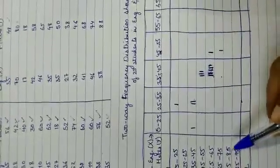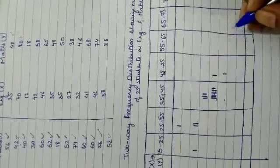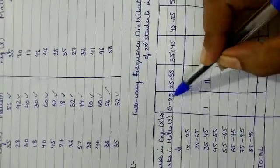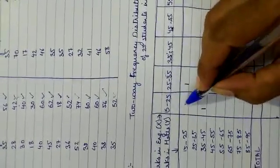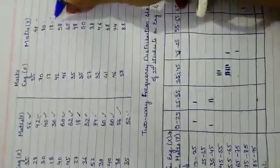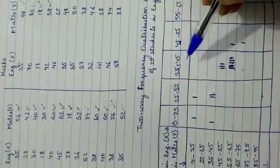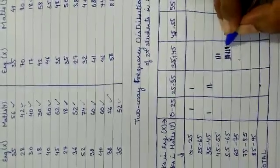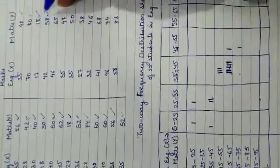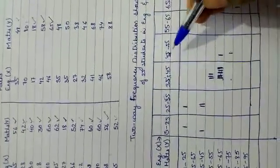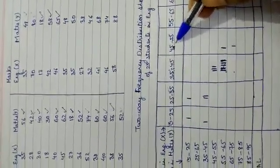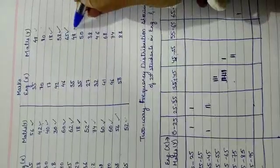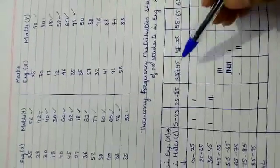Next is X=42 and Y=58: X=42 is in 35–45 and Y=58 is in 55–65, one more tally mark there. Then X=46 and Y=65: X=46 is in 45–55 and Y=65 falls in the 65–75 interval.